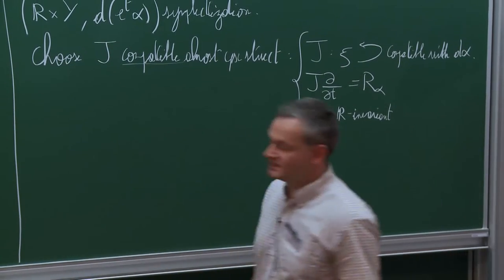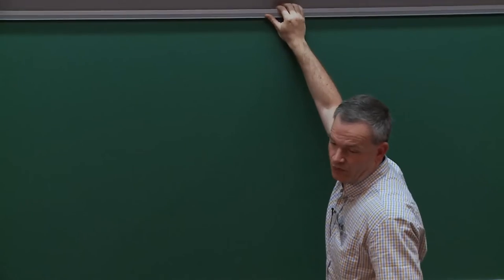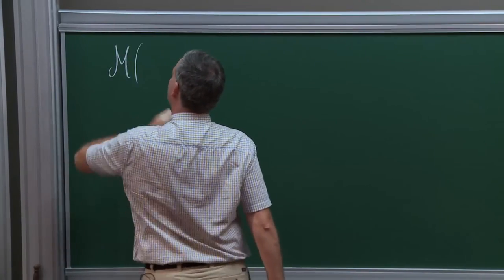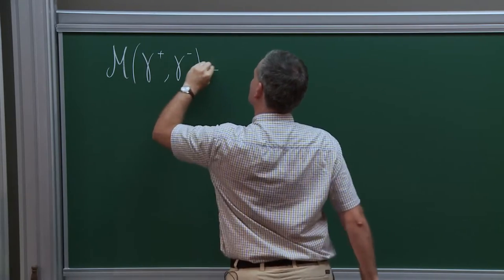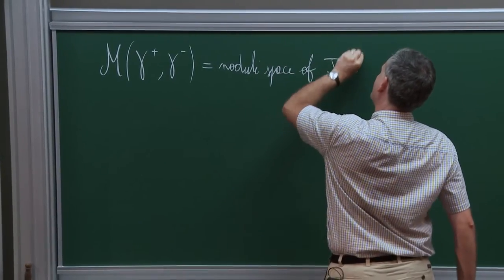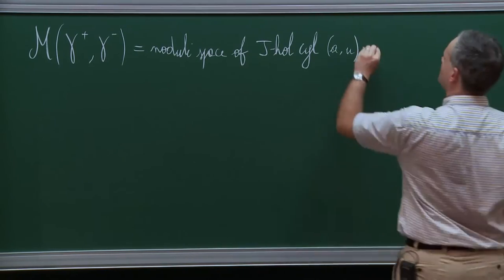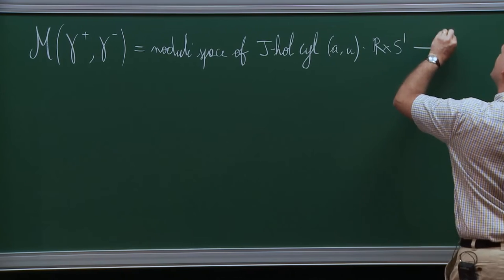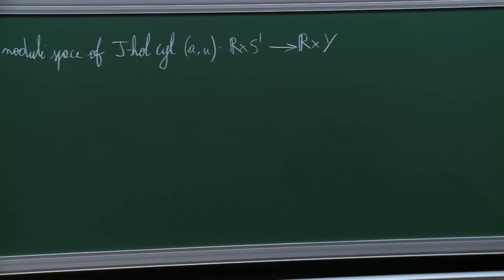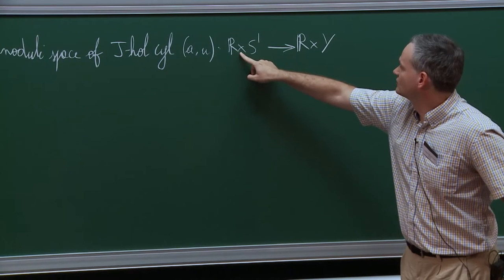Those are the two ingredients you need to set up this homological theory. Once you've made this choice, you can consider moduli spaces. I denote by M(γ⁺, γ⁻) the moduli space of J-holomorphic cylinders, which are maps with two components—a height function a and a map u defined on the cylinder with values in ℝ×Y. This means that the differential intertwines the obvious complex structure on the cylinder with the almost complex structure J on the symplectization.